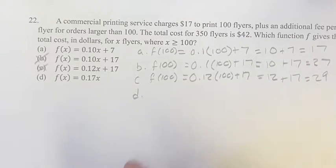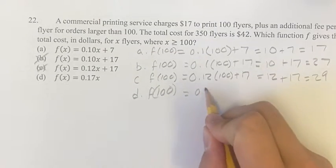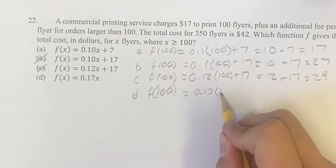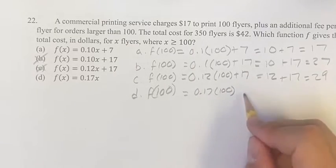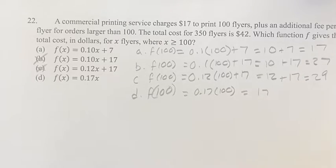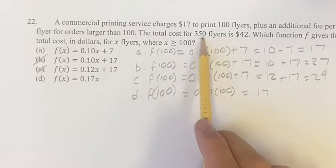For D, f(100) is real simple. It's just 0.17 times 100. We're plugging in 100 wherever we see x. 0.17 times 100 is 17. So D is good and A is good so far. Hopefully only one of them will work for 350.